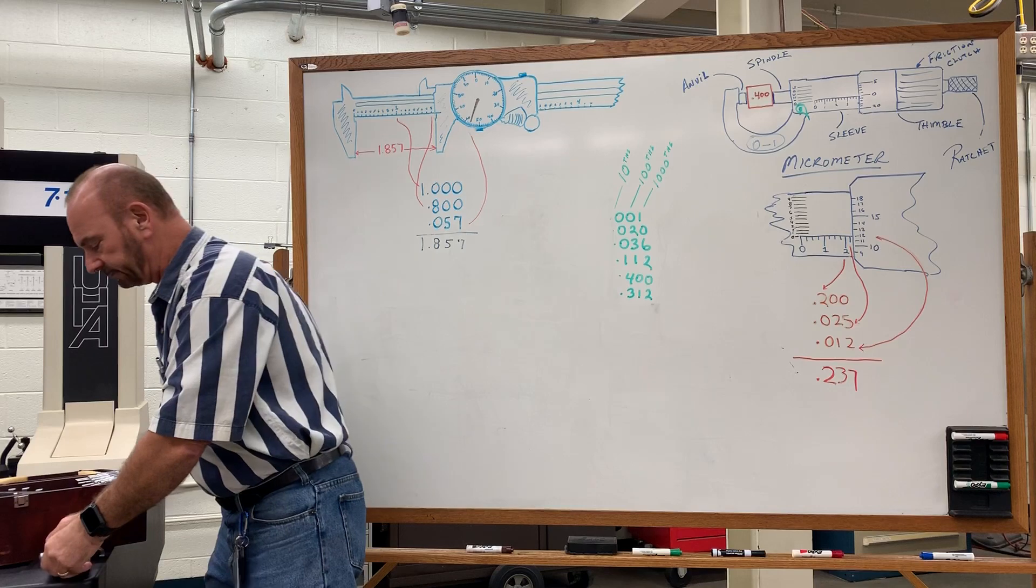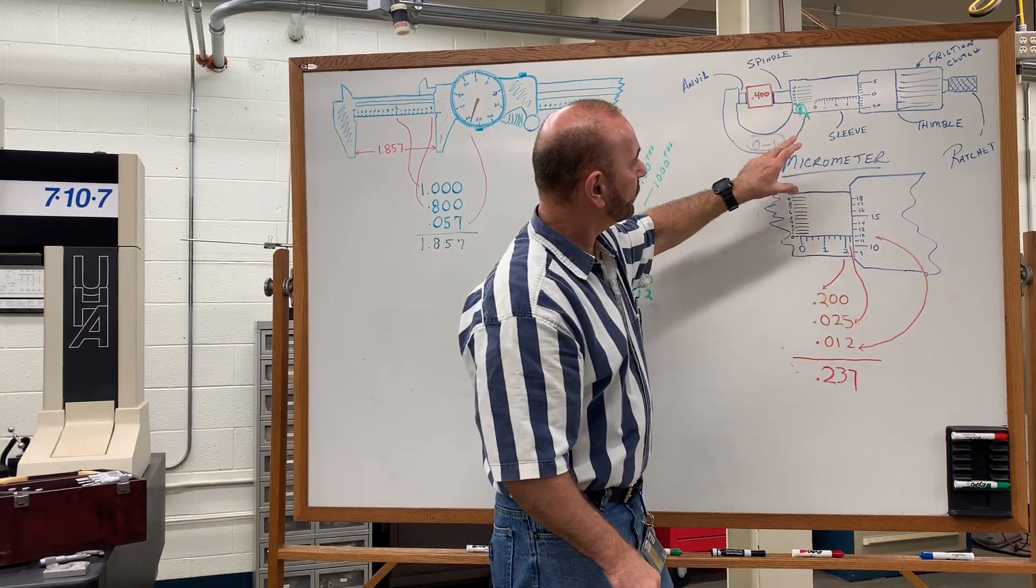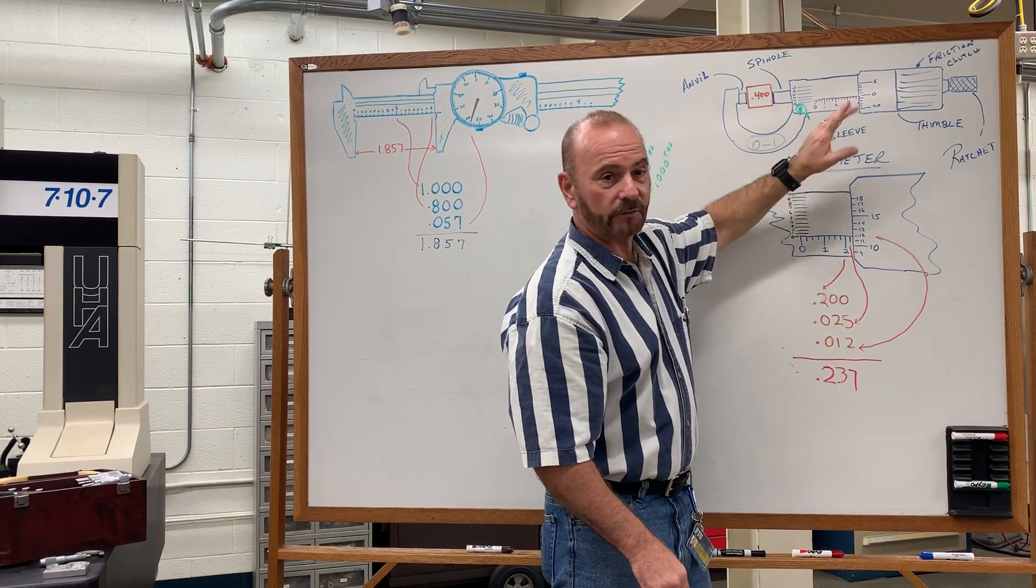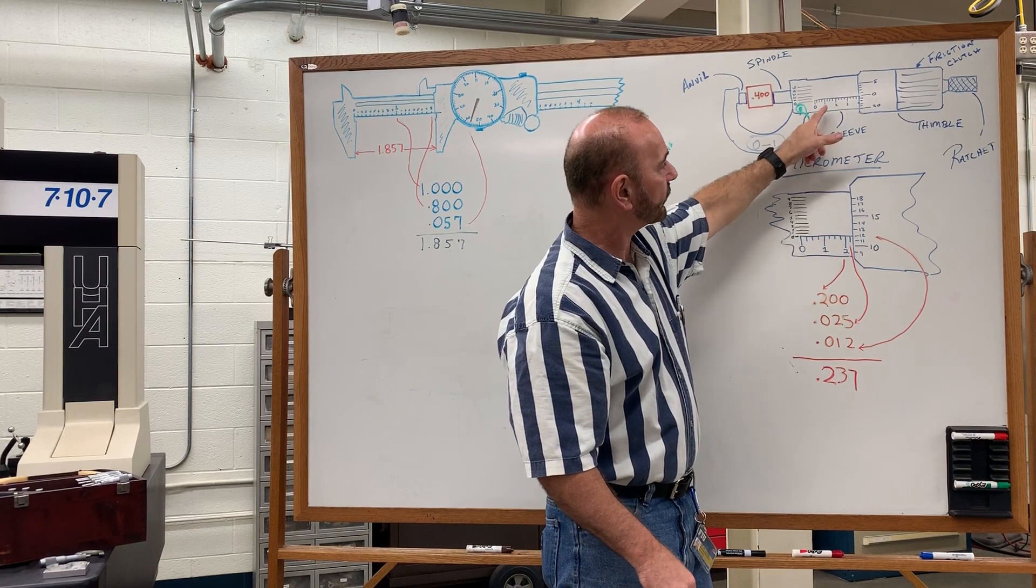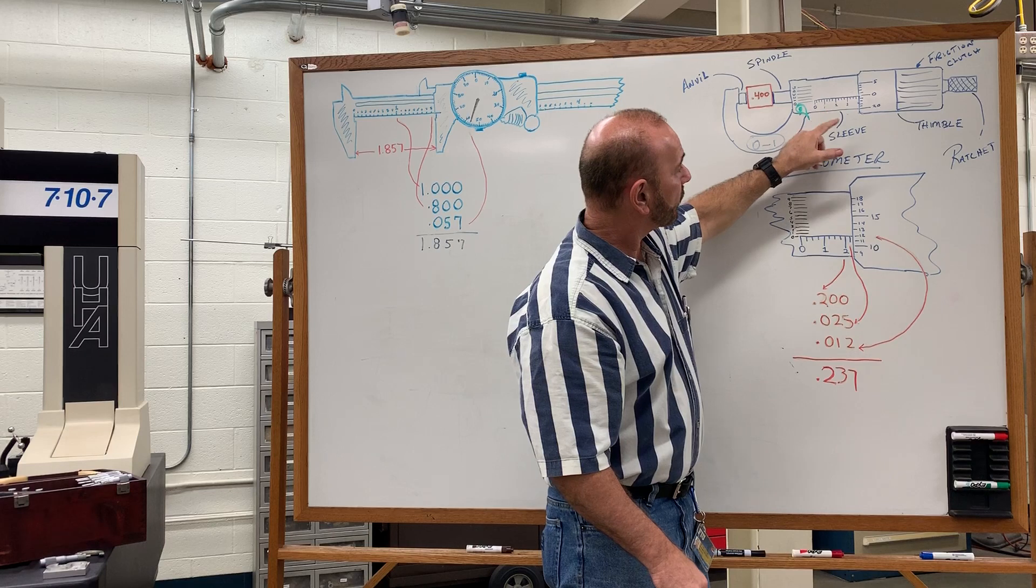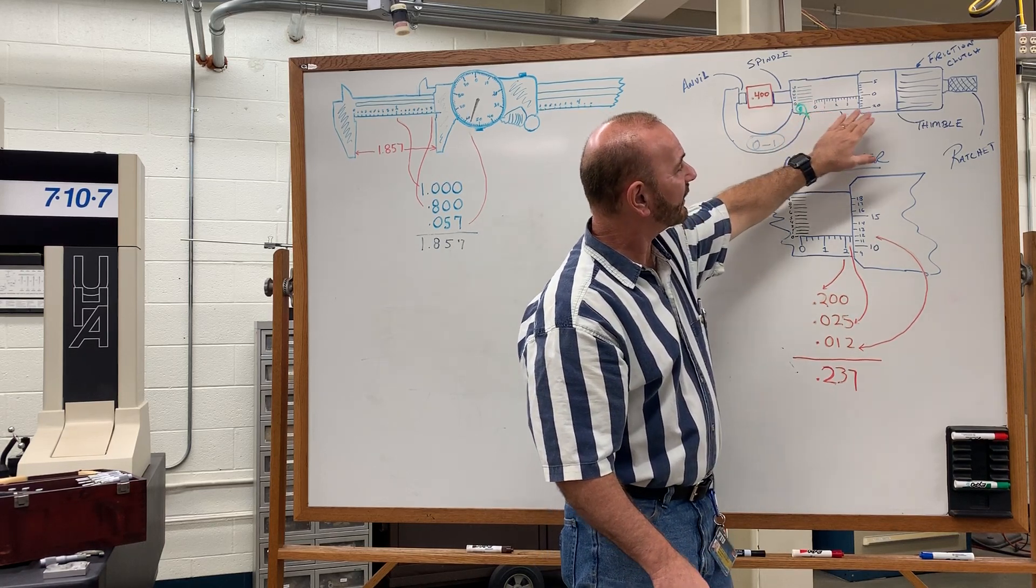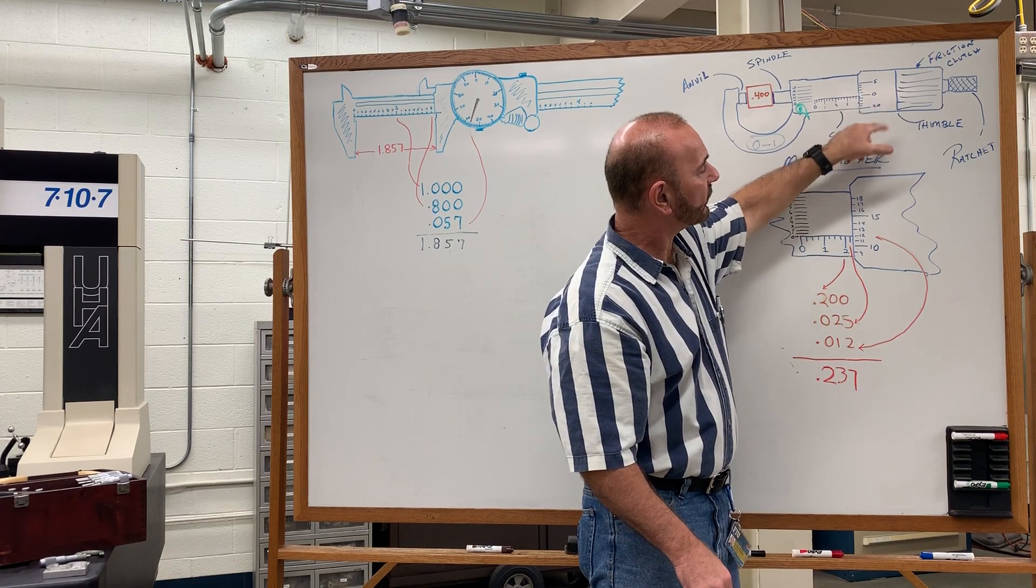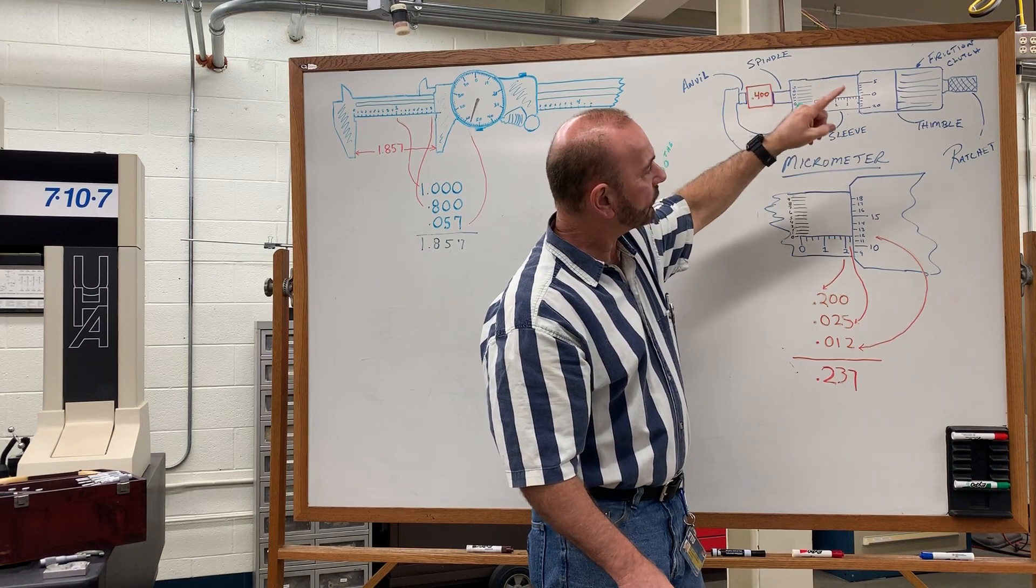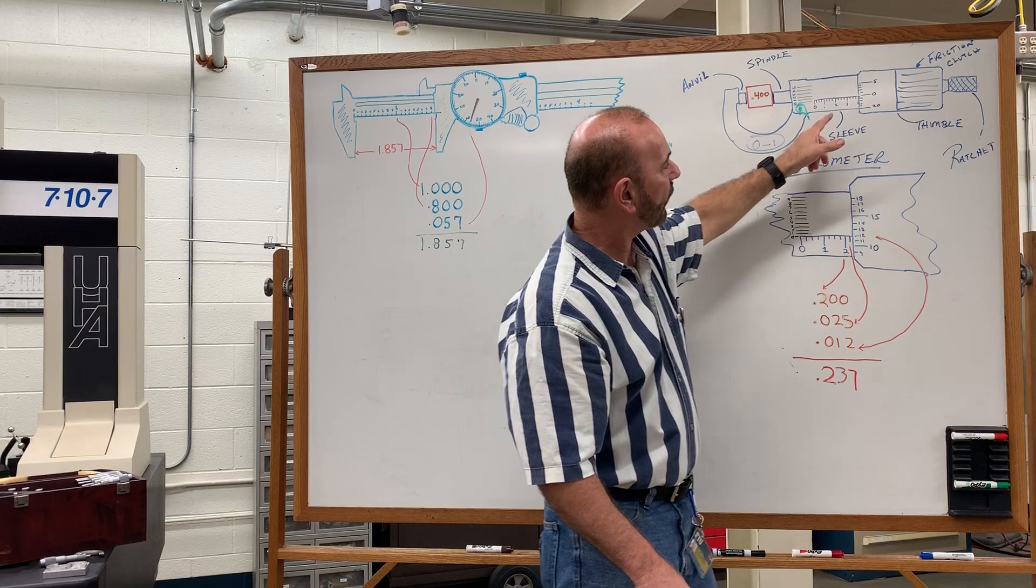Reading a micrometer is very simple. Look up at the board here. You have a breakdown on the scale. You have this static scale on the sleeve here. Each one of the whole numbers stands for 100 thousandths. They are subdivided into four 25 thousandths increments. So when we're taking a reading for the micrometer, we take this static scale in combination with the scale that's on the thimble, and that will give us our singular thousands.